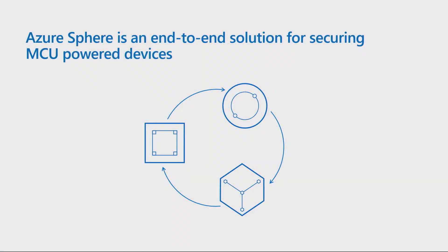The Azure Sphere chips are made by our silicon partners, but they each have an IP block — what we call a hardware root of trust — built into them, based on security technology that Microsoft has learned from and developed over 15 years. The second piece is the operating system that runs on these chips, creating a secure software environment for your code. The third piece is the Azure Sphere security service.